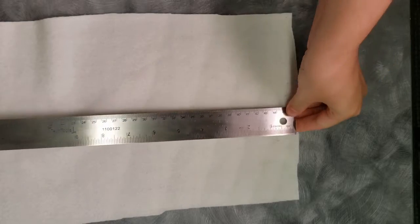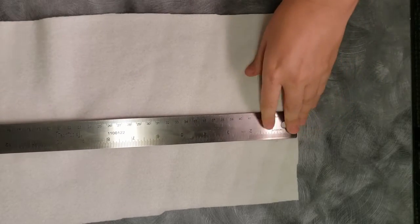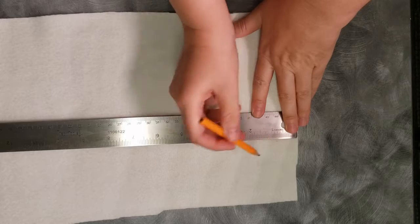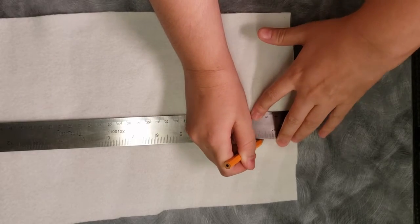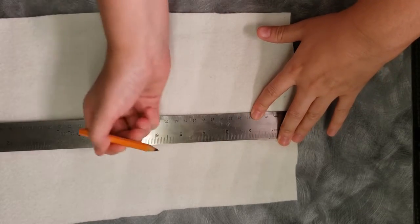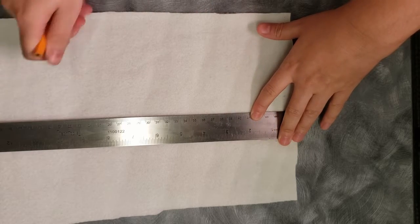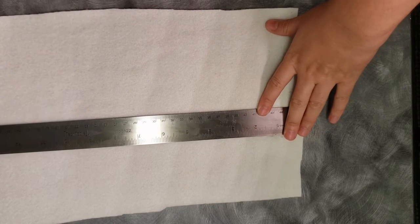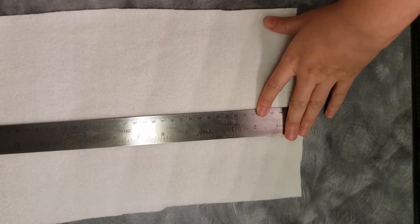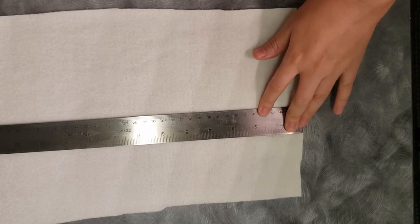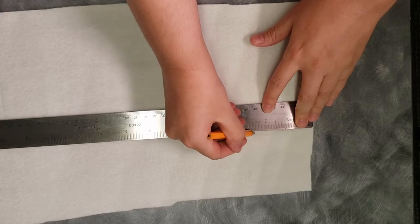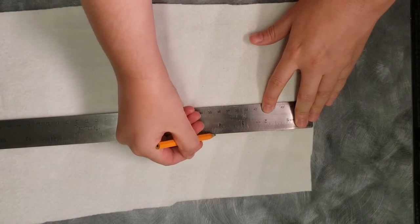Then you're going to put your ruler in line with the first mark. Starting after the one mark, you're going to make a mark that is half an inch long. At the one, two, three, four, five, all the way up until around 18 or 20 inches long. So make a mark here, here, here, here.